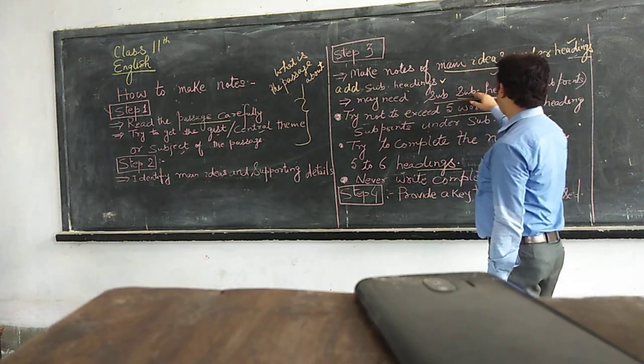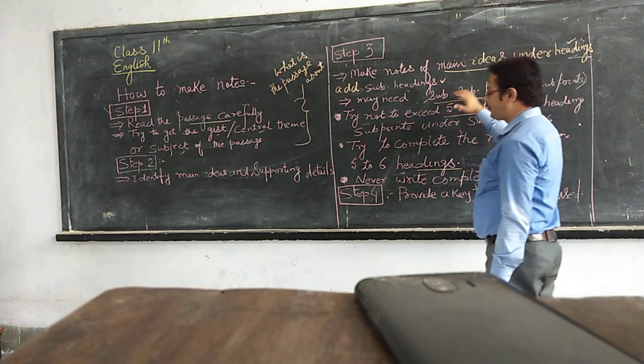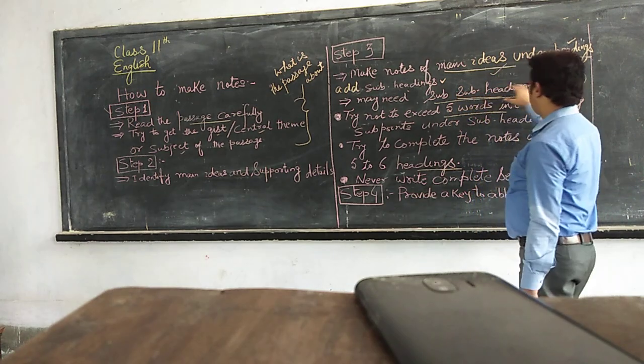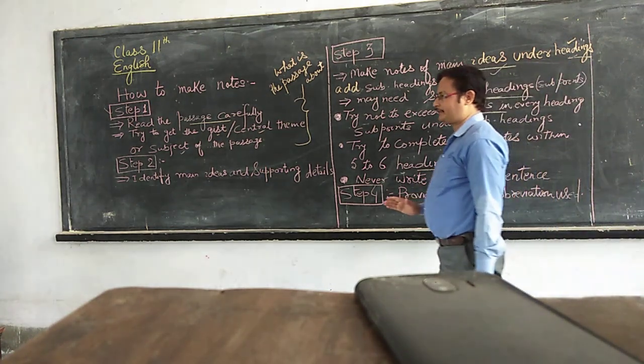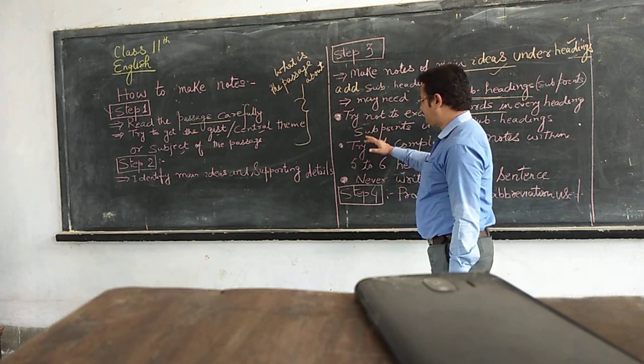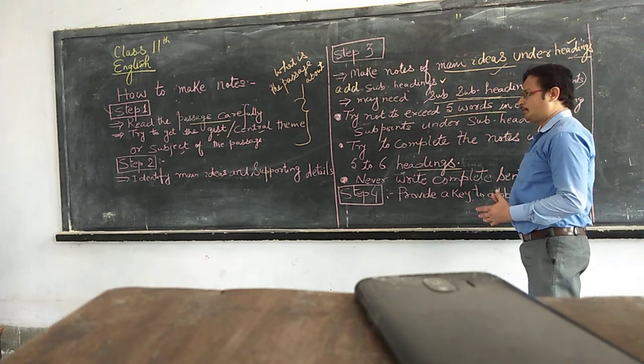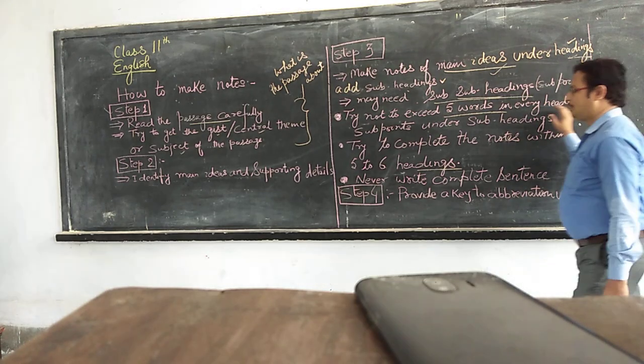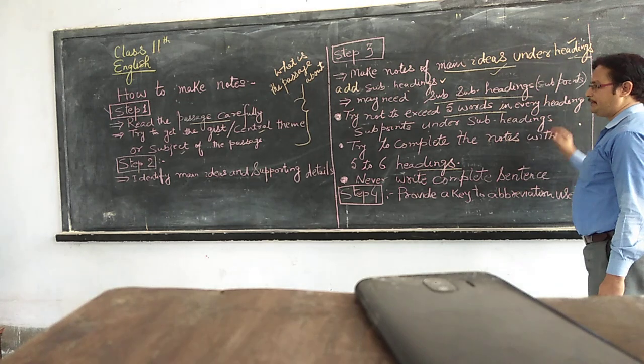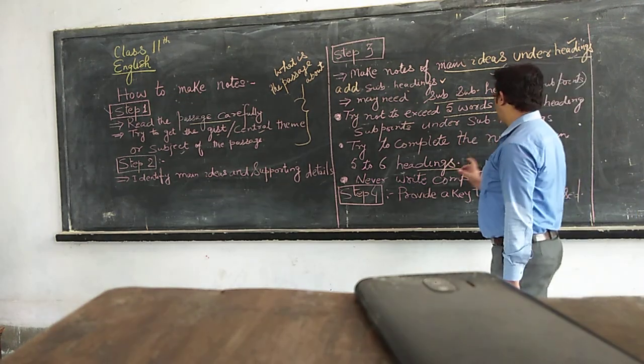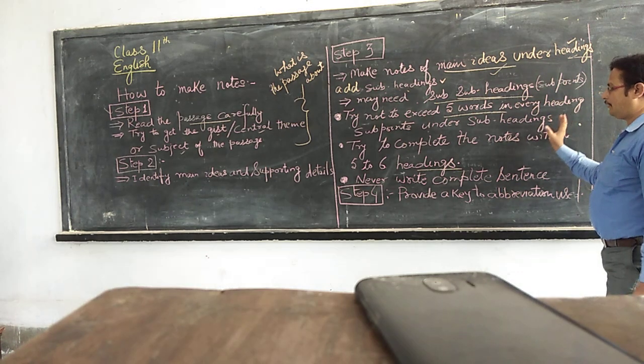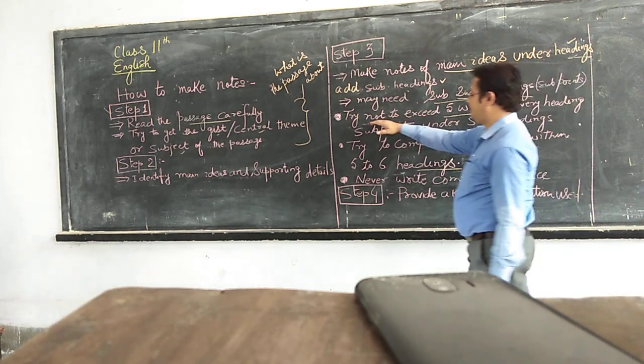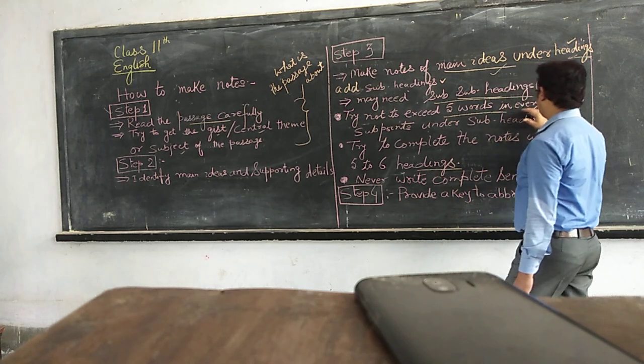You may need subheadings or subpoints or supporting details for subheadings. Apart from this, keep into consideration these 3 points while making notes. Try not to exceed 5 words in every heading, subpoints under subheadings. It means the maximum word limit for each heading or subheading is 5 words. Never try not to exceed 5 words in every heading.